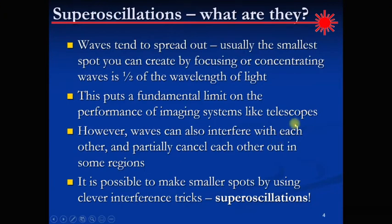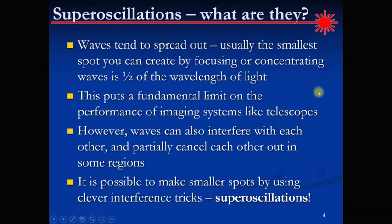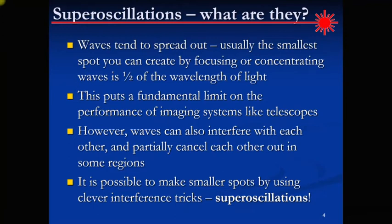This really comes down to the fact that waves tend to spread out. When a wave propagates, it spreads. Waves are a non-local phenomenon, and usually the smallest spot you can create by focusing or concentrating is about half the wavelength of light. This puts a fundamental limit on the performance of imaging systems like telescopes. However, waves can also interfere with each other — they can partially cancel out in some regions and enhance in others. By using those interference effects, you can do some clever tricks to make spots that are in fact smaller than half the wavelength of light. And these are what we call super-oscillations.